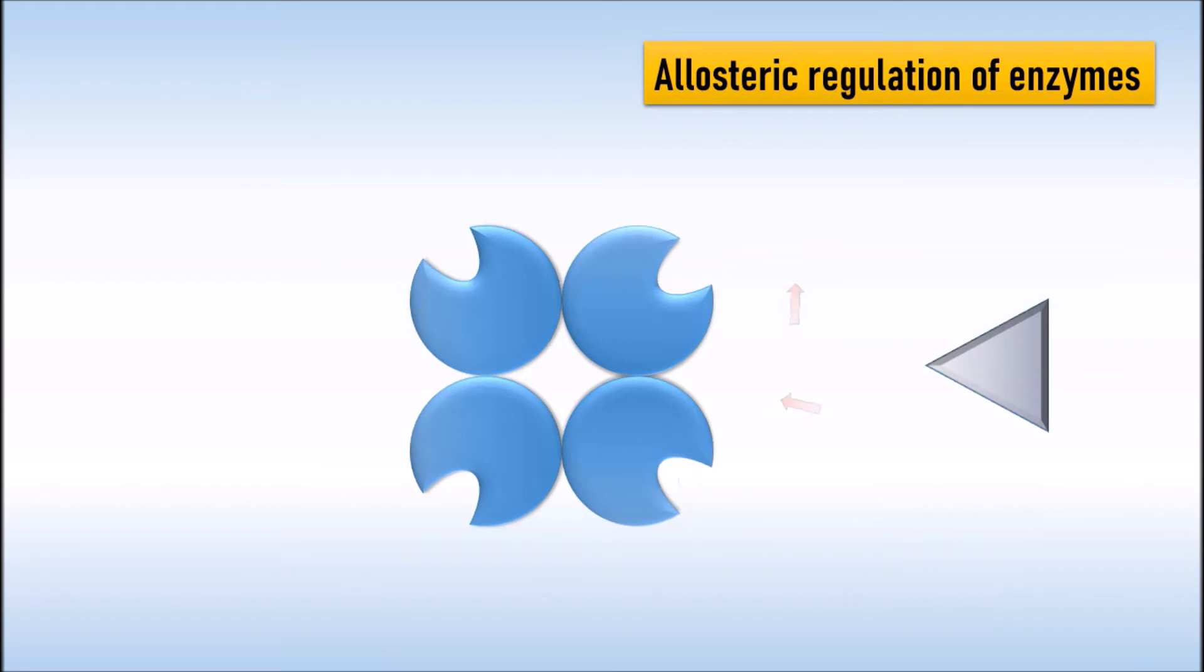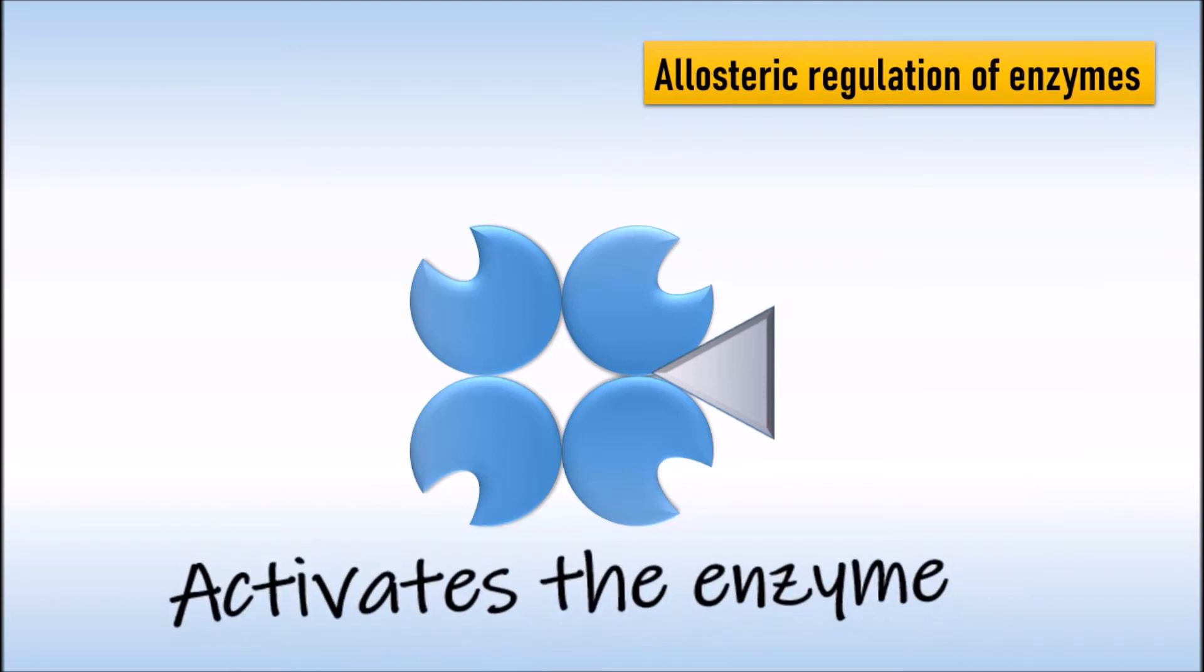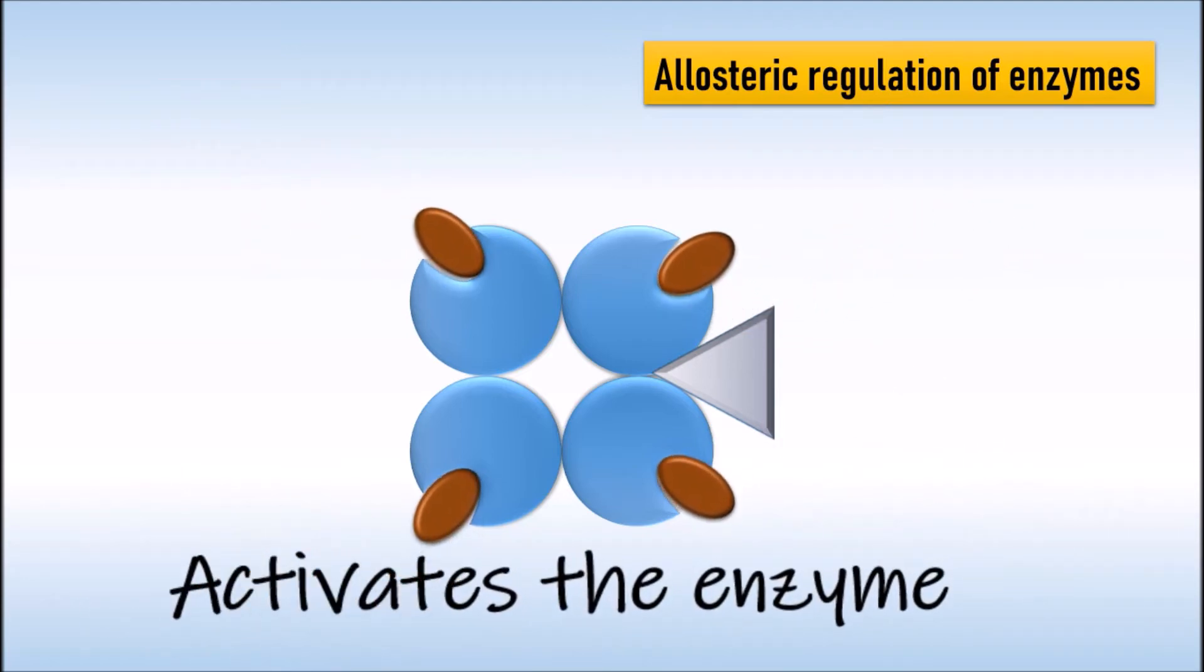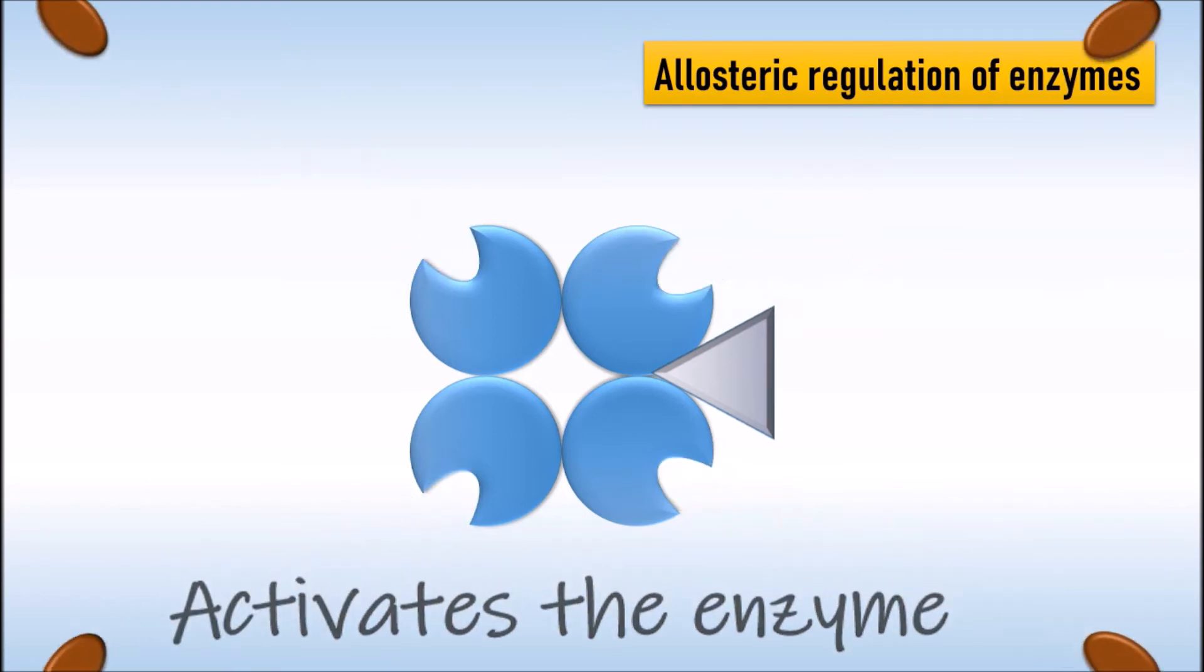When an activator binds with this regulator site, which is often located where subunits join, it stabilizes the shape with functional active sites. It causes an increase in the function of the active sites also in a process called cooperativity.